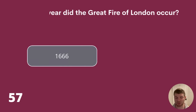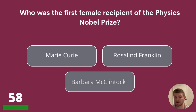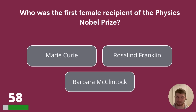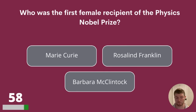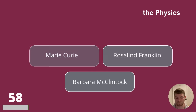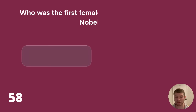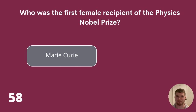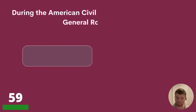Question 58. Who was the first female recipient of the Physics Nobel Prize? Marie Curie, Rosalind Franklin, or Barbara McClintock? The answer is Marie Curie.